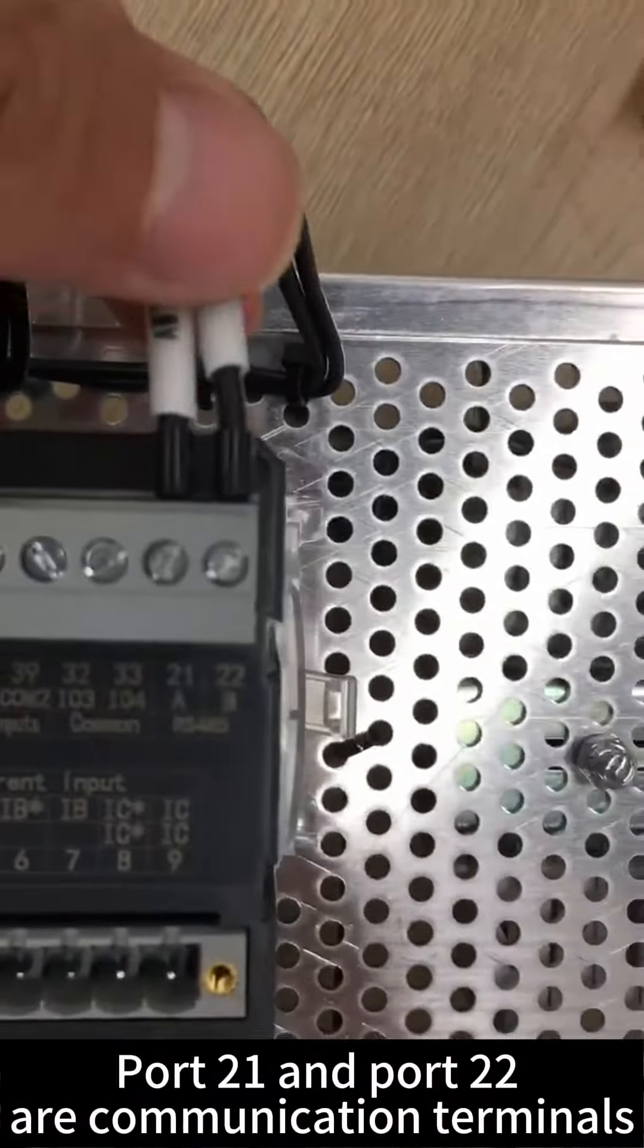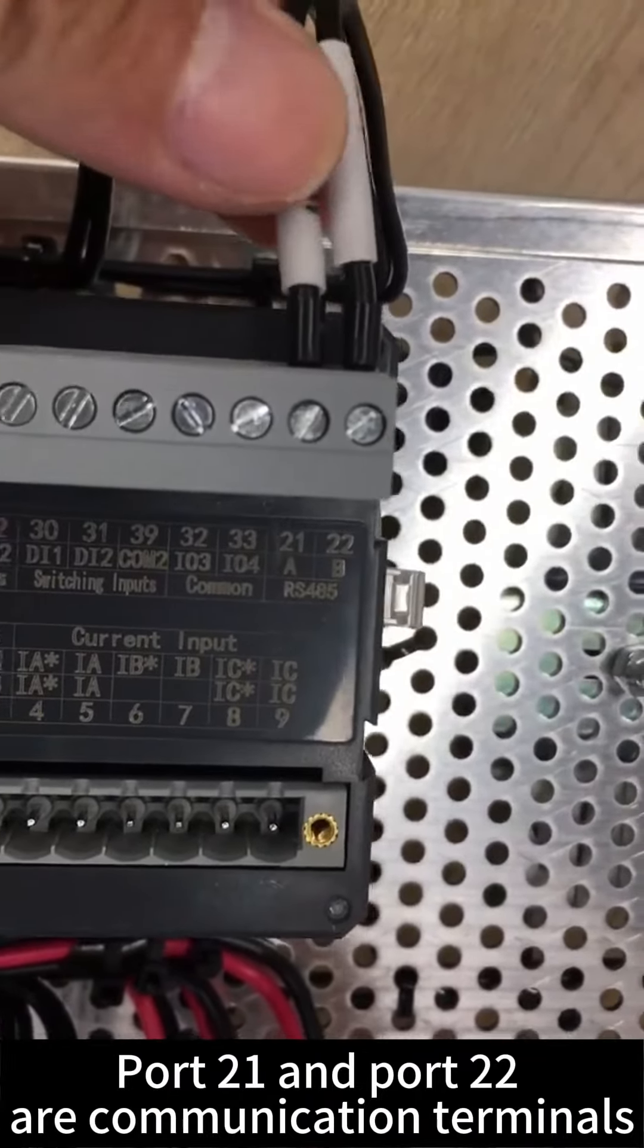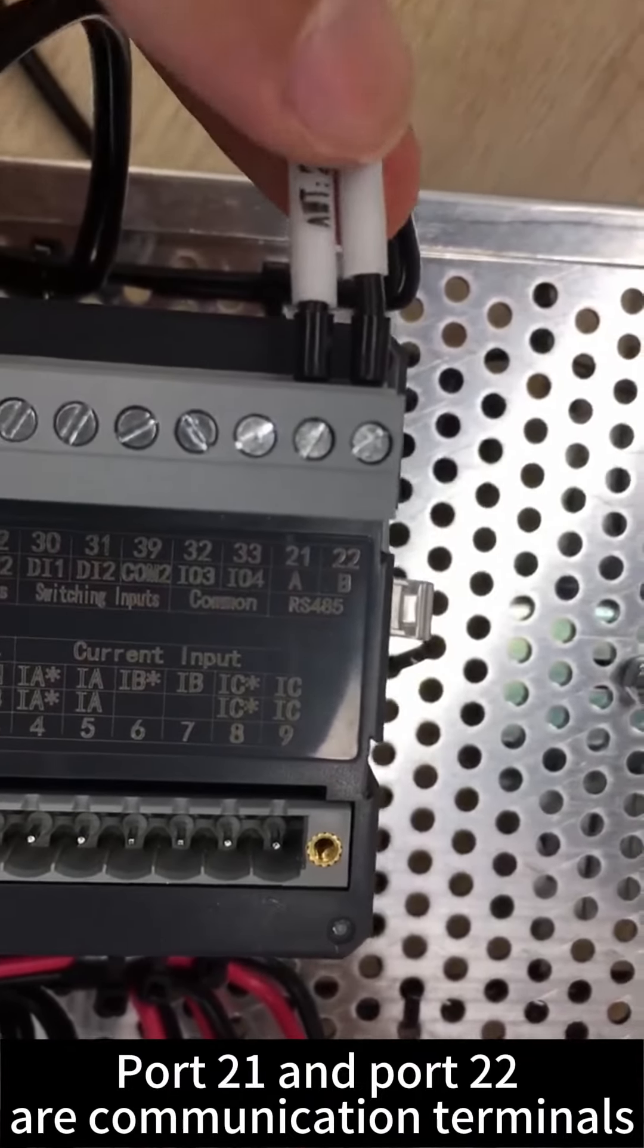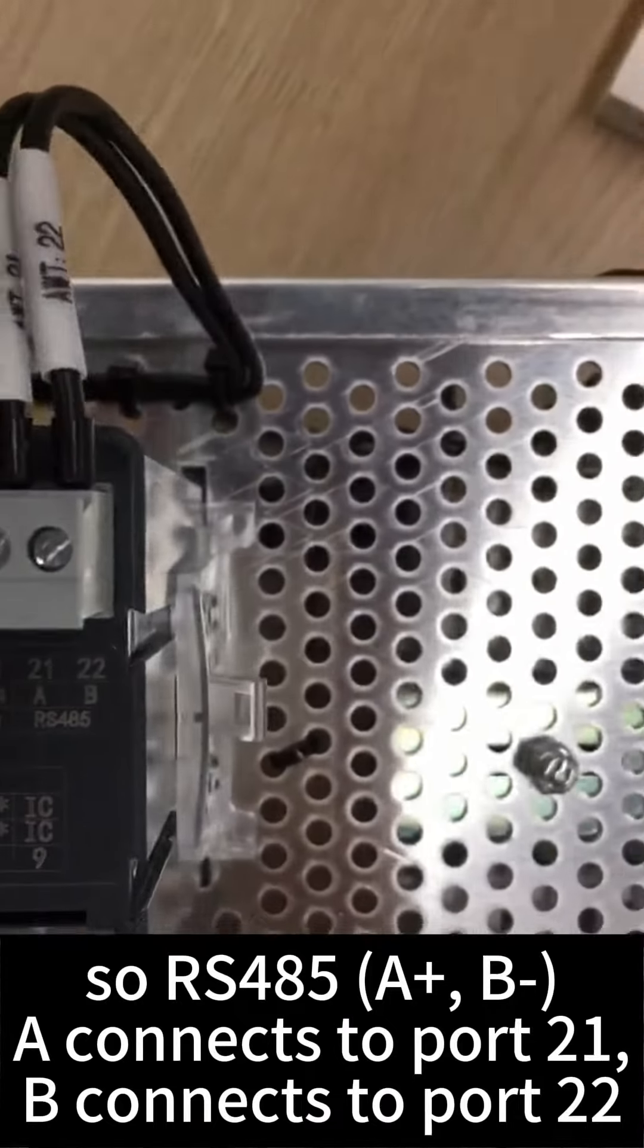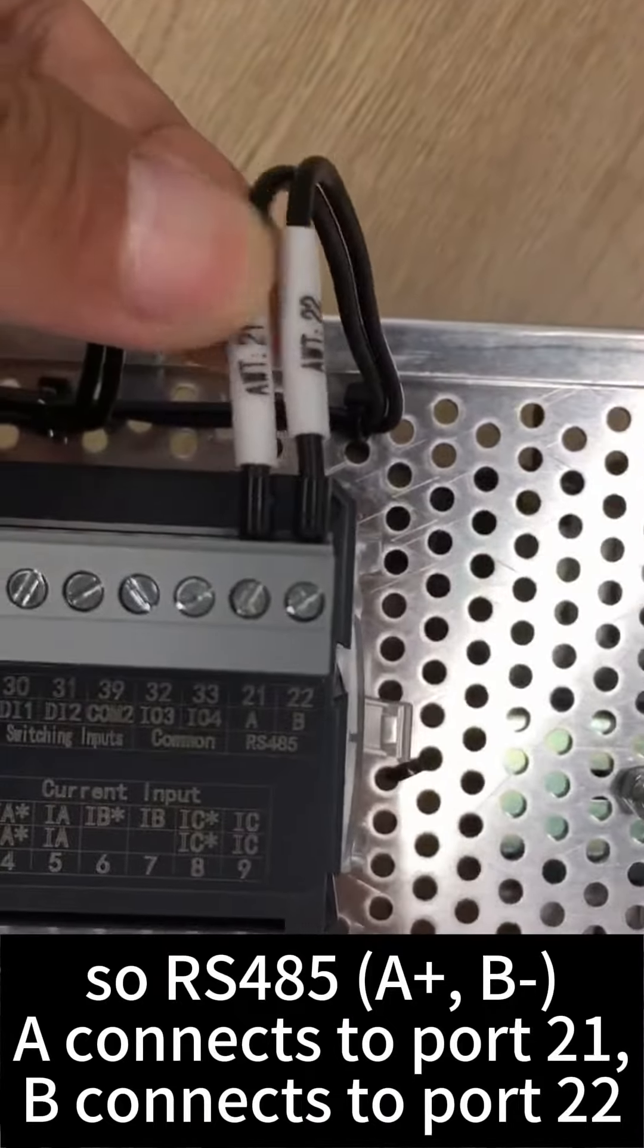Port 21 and port 22 are communication terminals, so 485 RS485 plus A connects to port 21, B connects to port 22.